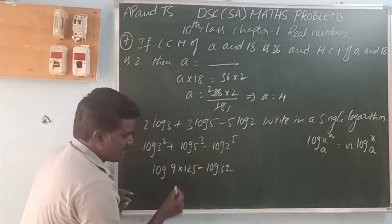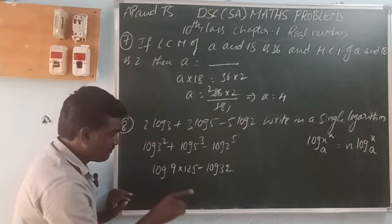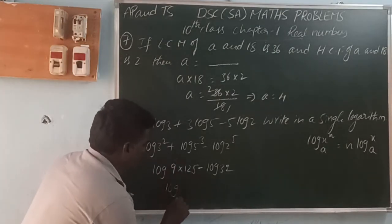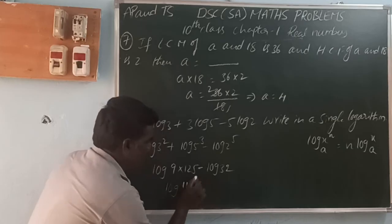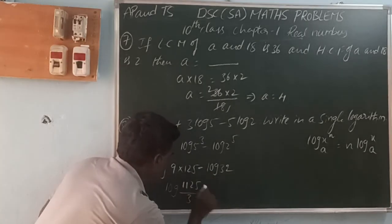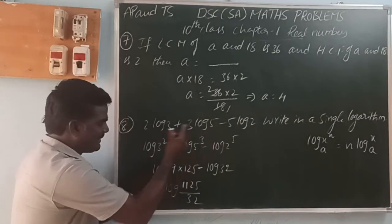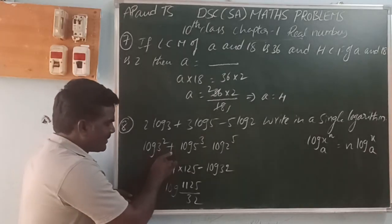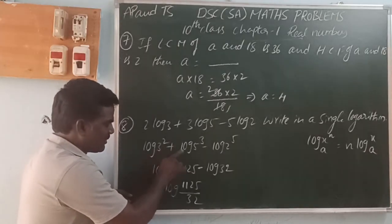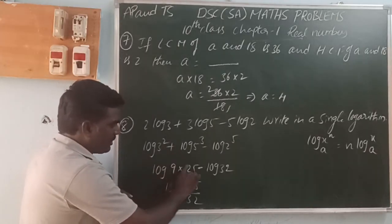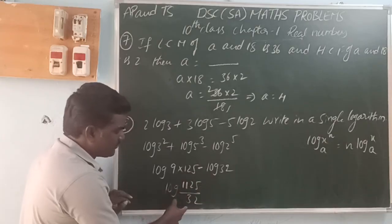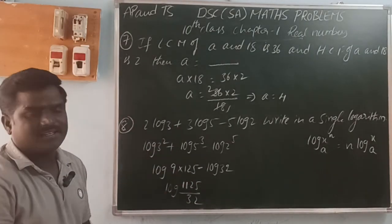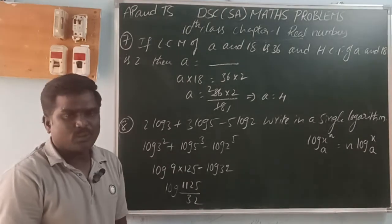Using the formula log x power n base a: the numbers inside the log, using the log formula, with 5 as the number, combining into a single log form. Thank you for watching our videos. Please subscribe to our YouTube channel and share with your friends. Thank you.